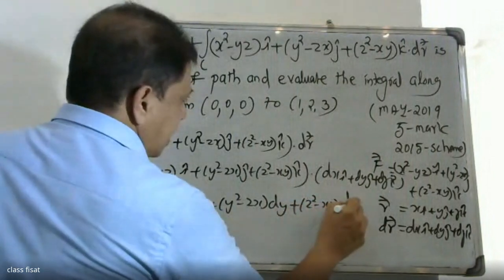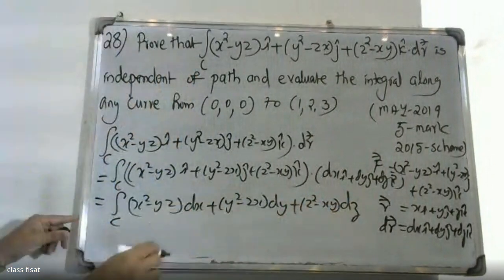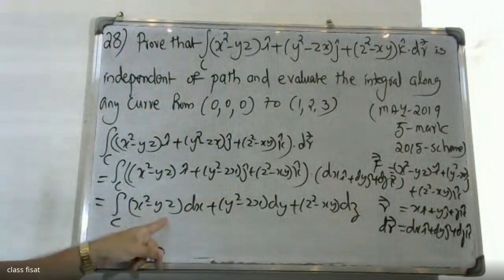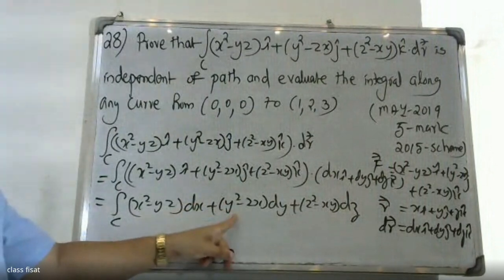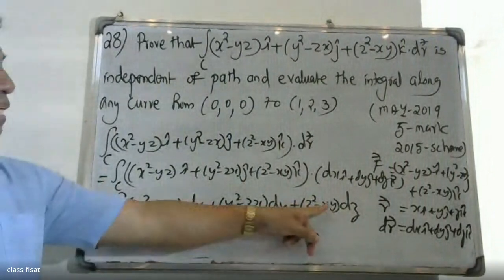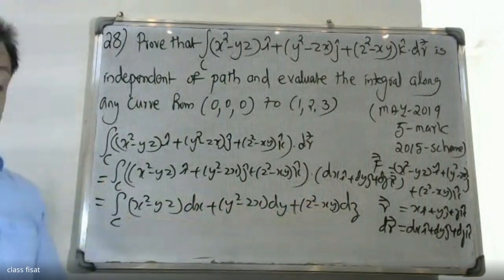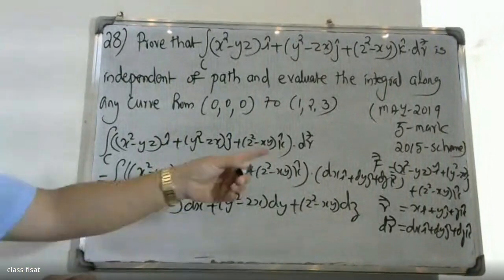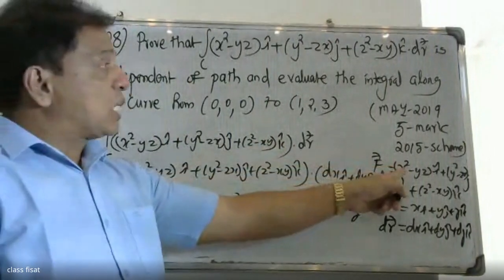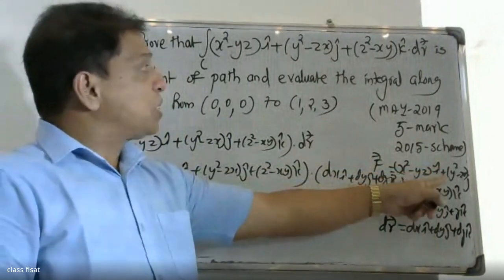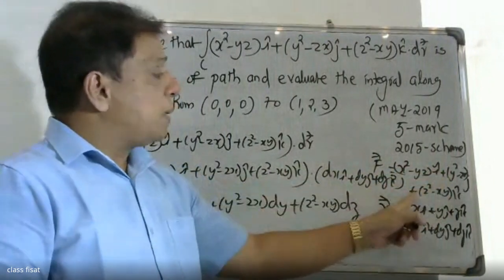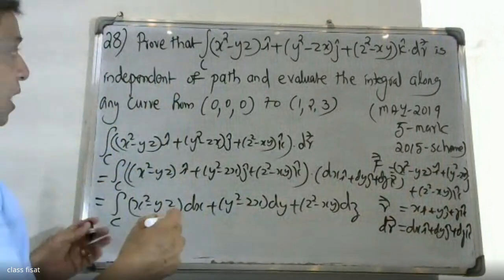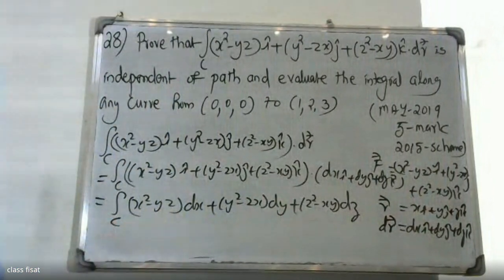The line integral is independent of path if del cross F equals zero. We set up the curl of F using the determinant with i, j, k in the first row.